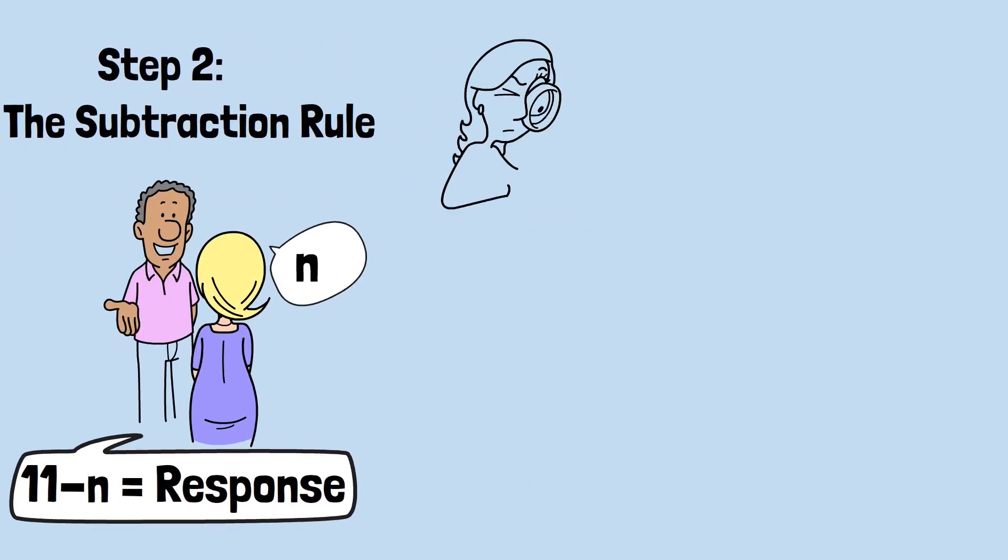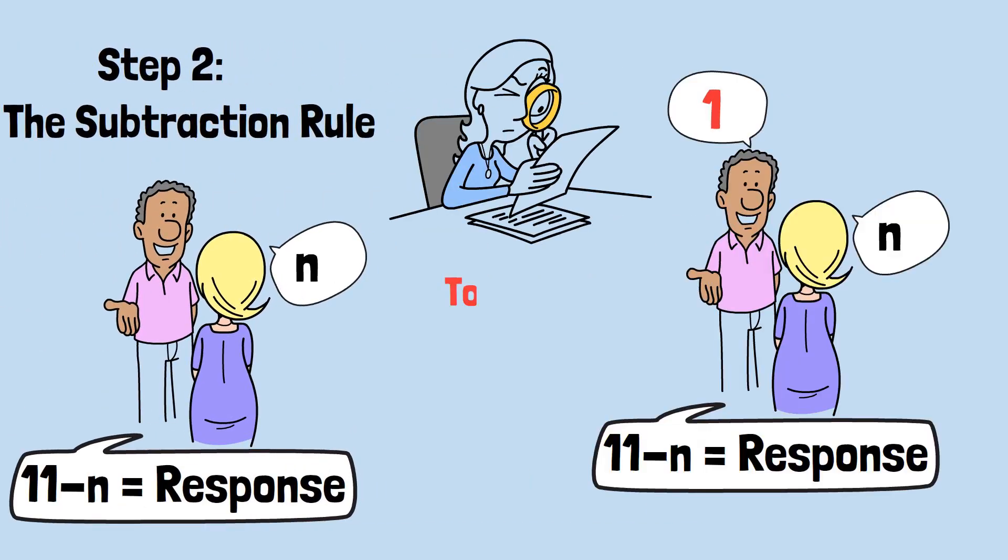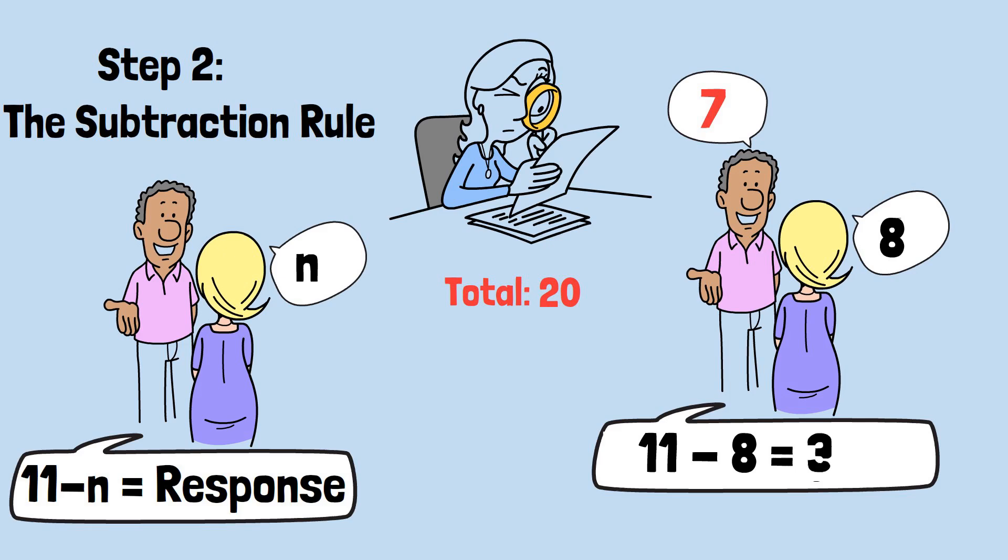Let's trace through this logic with a concrete example. You start with 1, total 1. Your opponent plays 4, total 5. You calculate 11 minus 4 equals 7, so you play 7, total 12. Your opponent plays 8, total 20. You calculate 11 minus 8 equals 3, so you play 3, total 23.